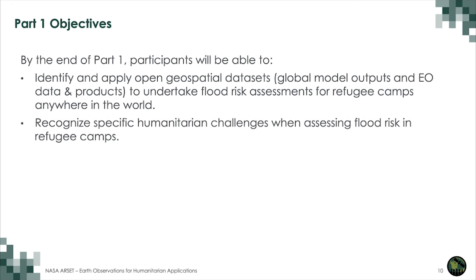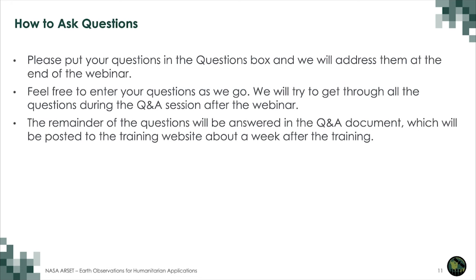A certificate of completion will be awarded to those who attend all live sessions and complete the homework assignment before the given due date. The objectives for the first part of the training are: by the end of part one, participants will be able to identify and apply open geospatial datasets, global model outputs, and Earth observation data and products to undertake flood risk assessments for refugee camps anywhere in the world, and recognize specific humanitarian challenges when assessing flood risk in refugee camps. Please put your questions in the question box and we will address them at the end of the webinar. Remaining questions will be answered in the Q&A document posted to the training website prior to next week's training.